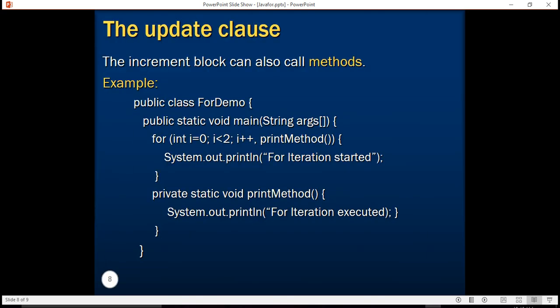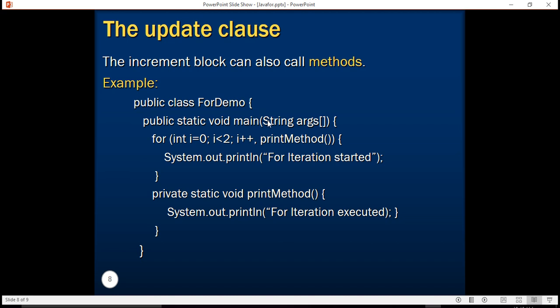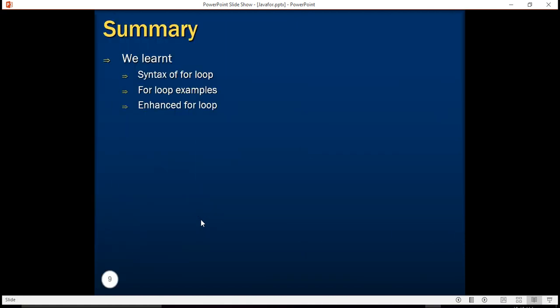Note that the increment expression can also be a method name — wherever we write i++ or j++, you can substitute this with a method call. In this example, a print method is used as the increment expression, and print is a separate method. So in this tutorial we have learned the syntax of for loop, saw different kinds of for loop examples, and understood the enhanced version of for loop. Hope you all enjoyed this tutorial — stay tuned.